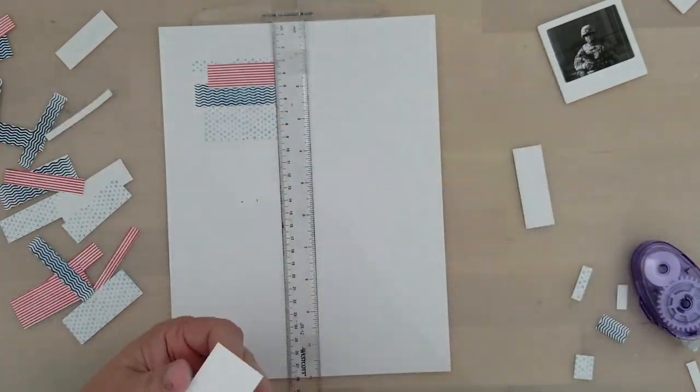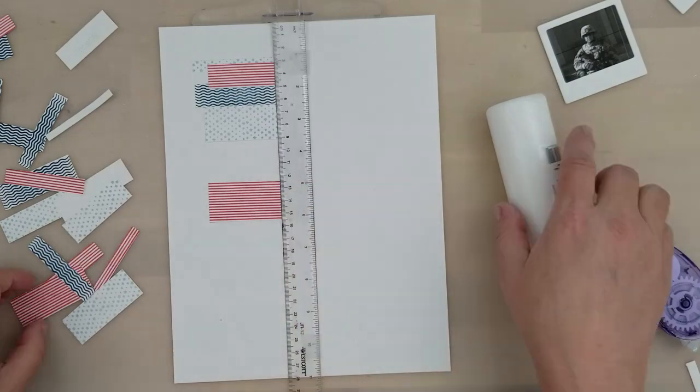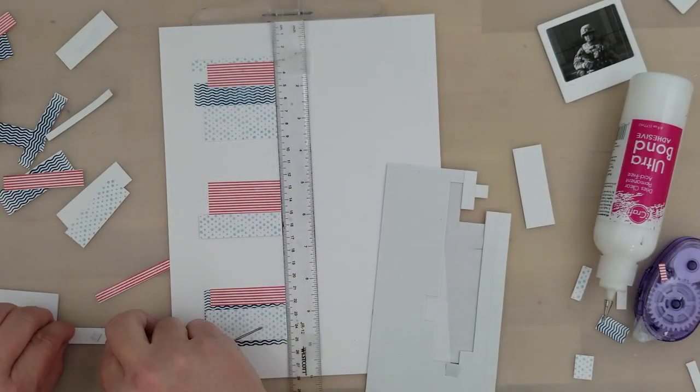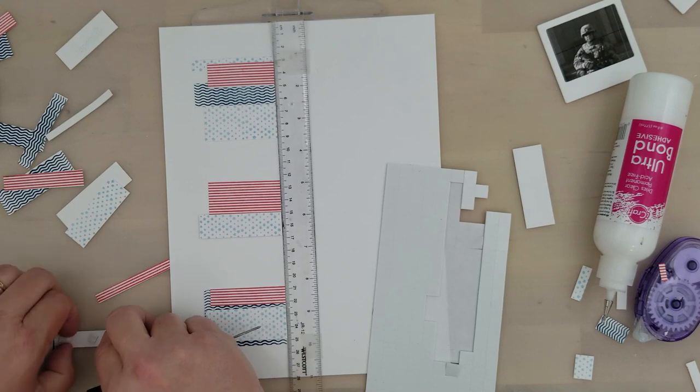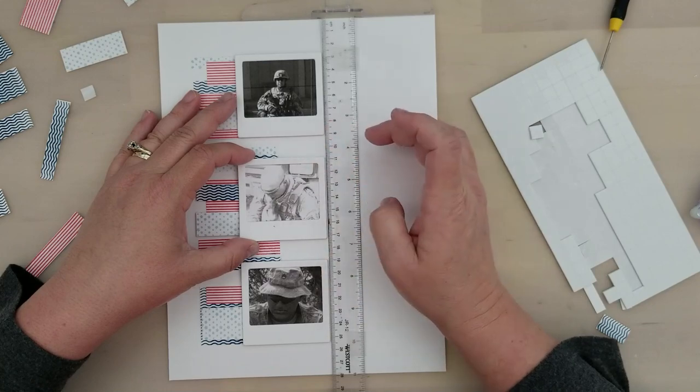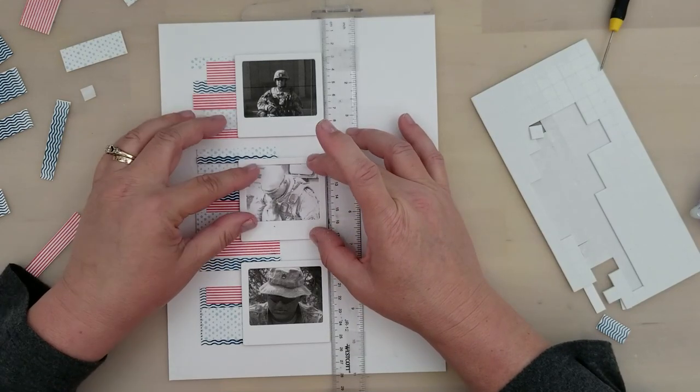If you've ever seen me make a card, you know I love my mounting foam. So of course you can always skip it and adhere these straight to the page if you want. Now I am going to trim these strips down some. I want the left side of the strips to stagger down my page. I don't want them to run straight - I just think it adds a little bit more visual interest.